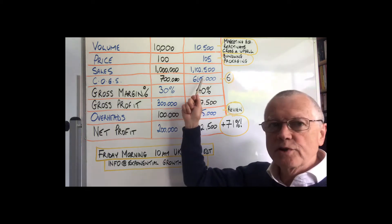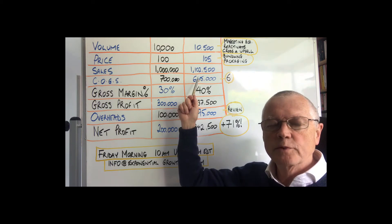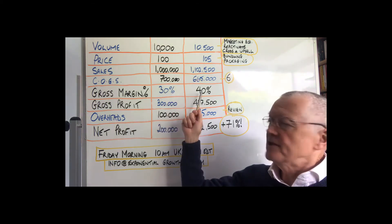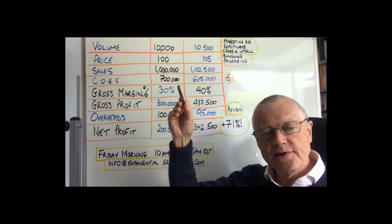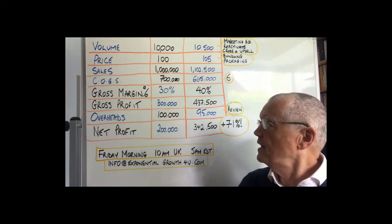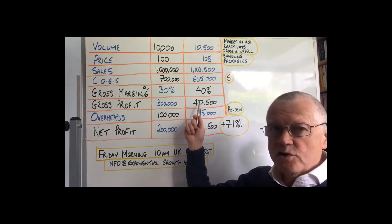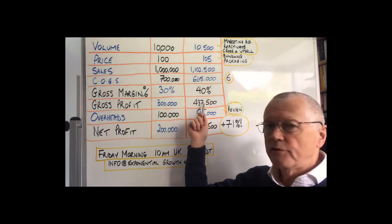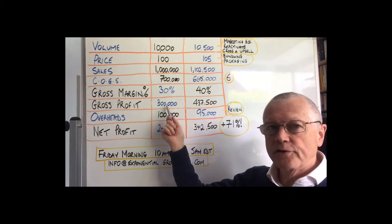But it's quite feasible, you could easily reduce your variable costs by 5%. That would take your gross margin now up to 40% because your prices are slightly higher and your variable costs are slightly lower. That would give you a gross profit on that new turnover figure of 437,500 instead of 300,000.